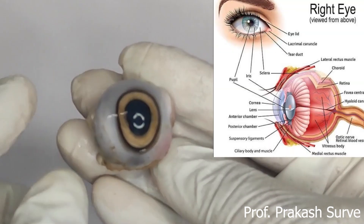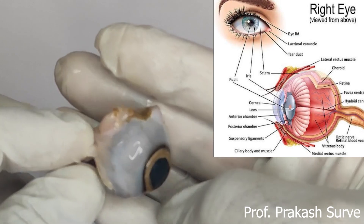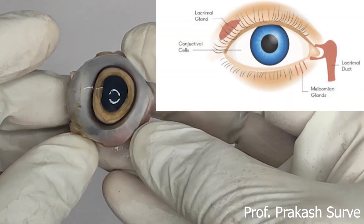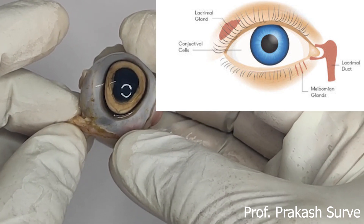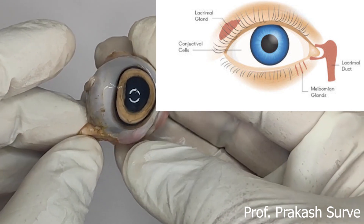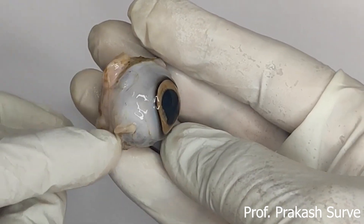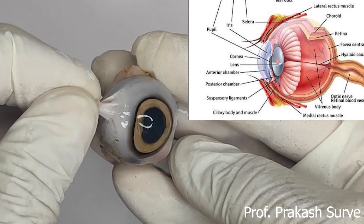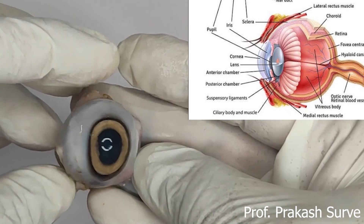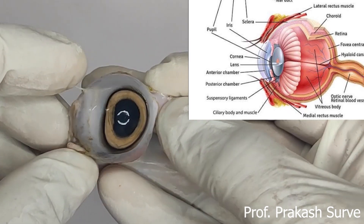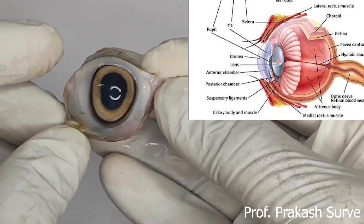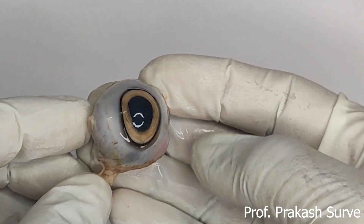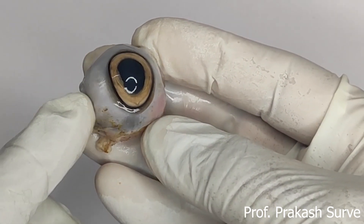On the side you can observe some moisture — the lacrimal glands, or tear glands, are present there. The movement of this eyeball is controlled by six sets of muscles, which allow movement in the lower, upper, and side directions.